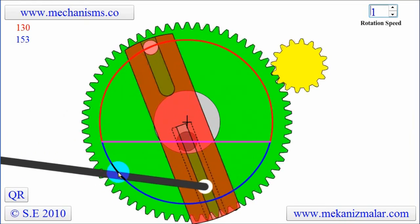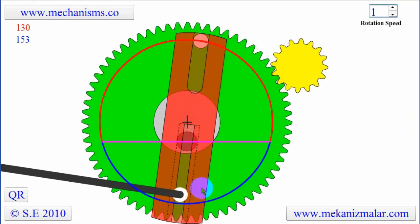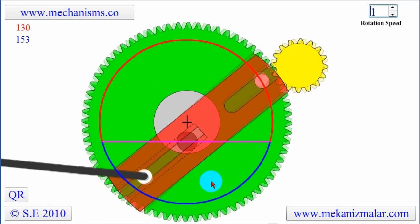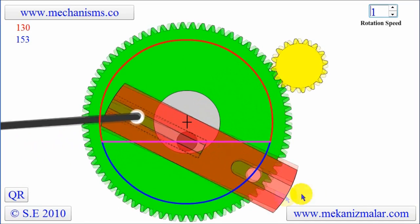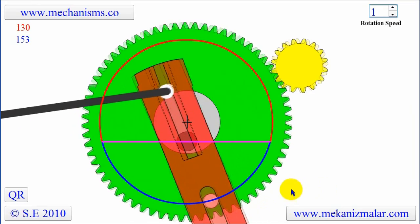This is also true for the white pin attached to the black link. This is why the black link moves faster when the white pin attached to the green bull gear is moving through the blue segment.